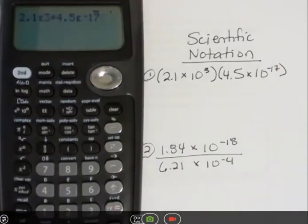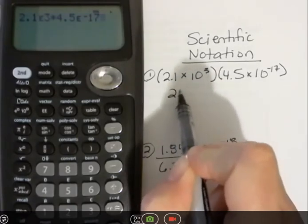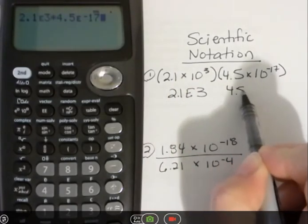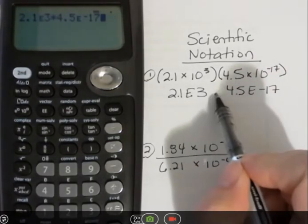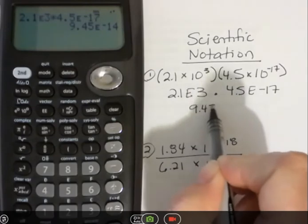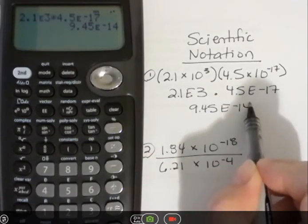So notice that when I put it into the calculator, it doesn't look like this. It looks like this. And this looks like 4.5e negative 17. That's how it looks in the calculator, but the calculator is reading it as we know our problem. Hit enter, and it's going to give you your answer in that same calculator format, which is 9.45e negative 14.